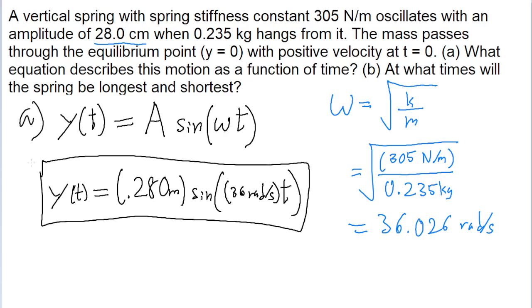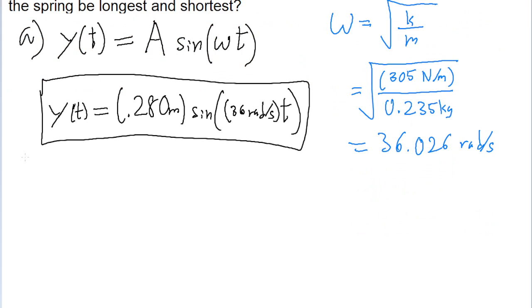The second part of the problem asks for what times the spring will be the longest and the shortest. That is part B. So remember that the formula for period is that the period of an oscillation, T, is equal to 2 pi divided by the angular frequency.